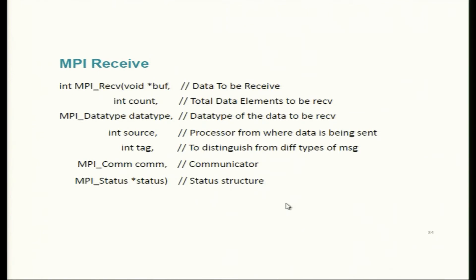At the receive side we must have a buffer to receive into, a count, and the data type. We specify the source rank from which we'll receive and a matching tag value — sender and receiver tag values must match, otherwise the transaction won't complete and the program will hang. There is an additional parameter: status, which is a structure data type.